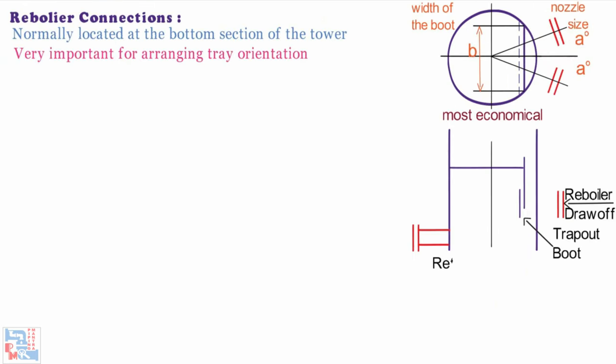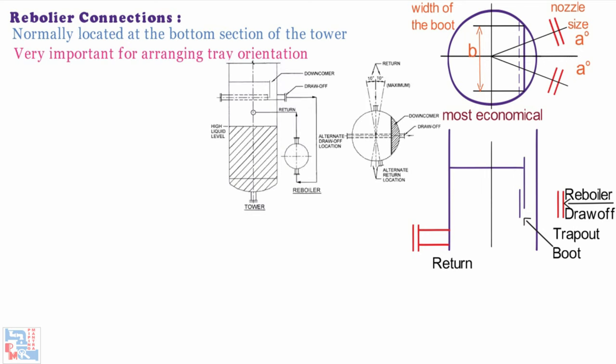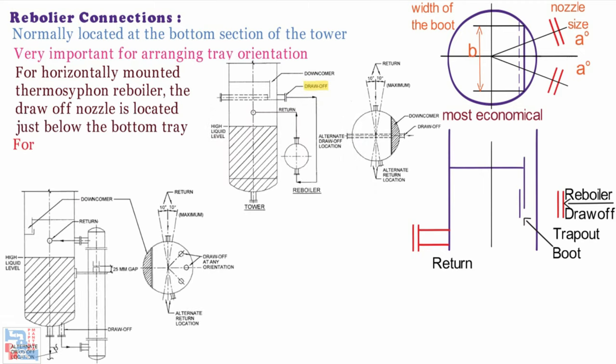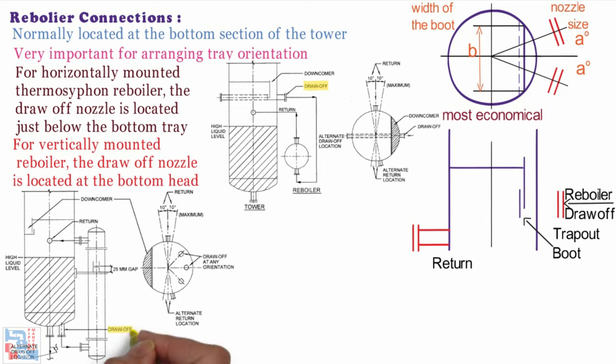The return connection from the thermosyphon reboilers is shown. For horizontally mounted thermosyphon reboilers, the draw off nozzle is located just below the bottom tray. And for vertically mounted recirculating thermosyphon reboiler the draw off nozzle is located at the bottom head.